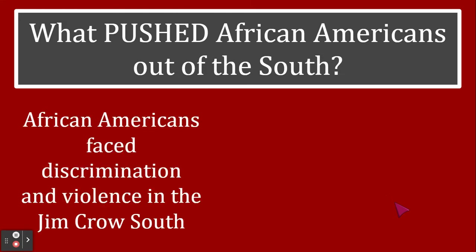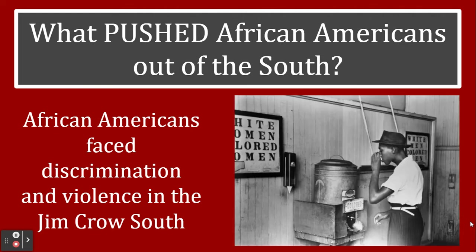Another push factor is that African Americans faced discrimination and violence in the Jim Crow south. Jim Crow laws put into place in southern states caused segregation and discrimination. This photograph shows separate water fountains for white men and women versus colored men and women — a more appropriate term today would be African American. This kind of segregation and discrimination was happening throughout the Jim Crow south, even through World War One.